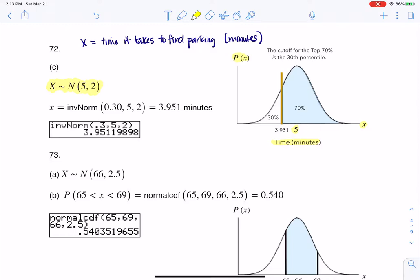Now for 72, it was phrased '70% of the time, it takes more than how many minutes to find a parking space.' The key phrase in there is the 'more than,' which is telling us we want the top 70%. So if I want the top 70%, that means I want to find this x value right here, that is the cutoff.